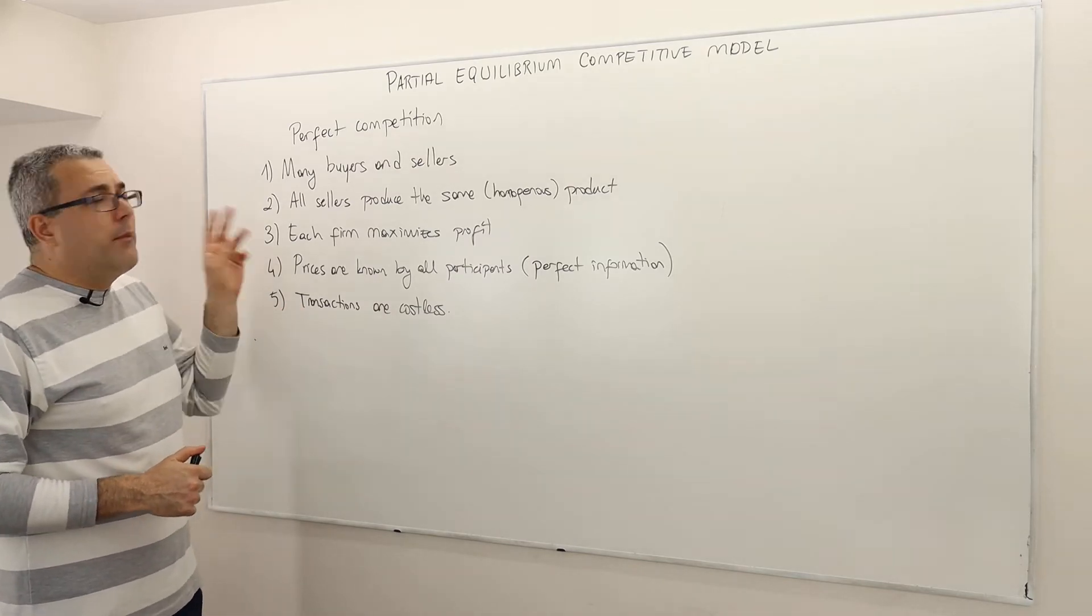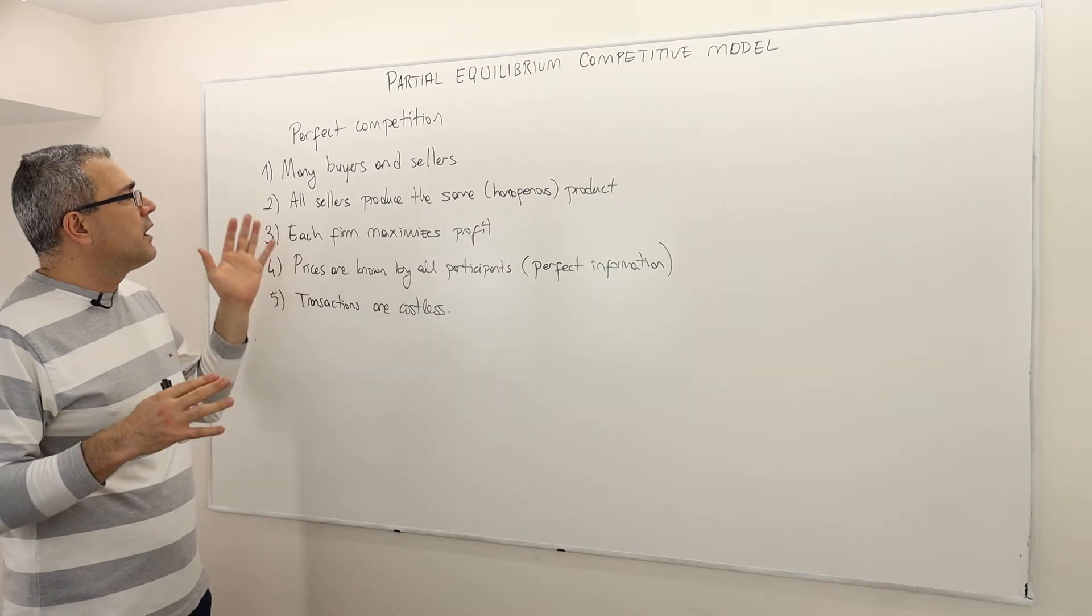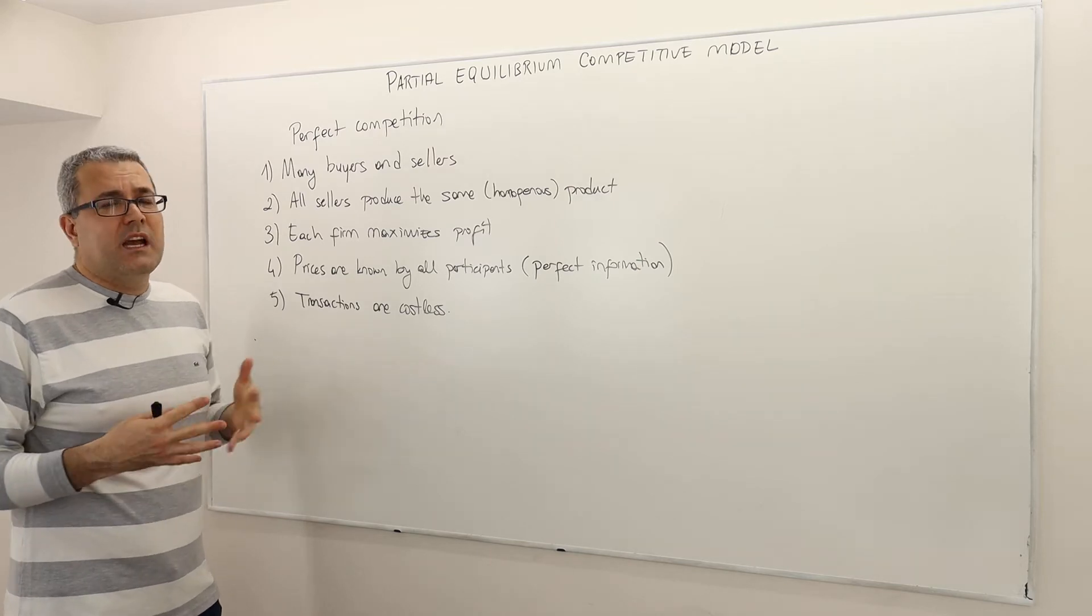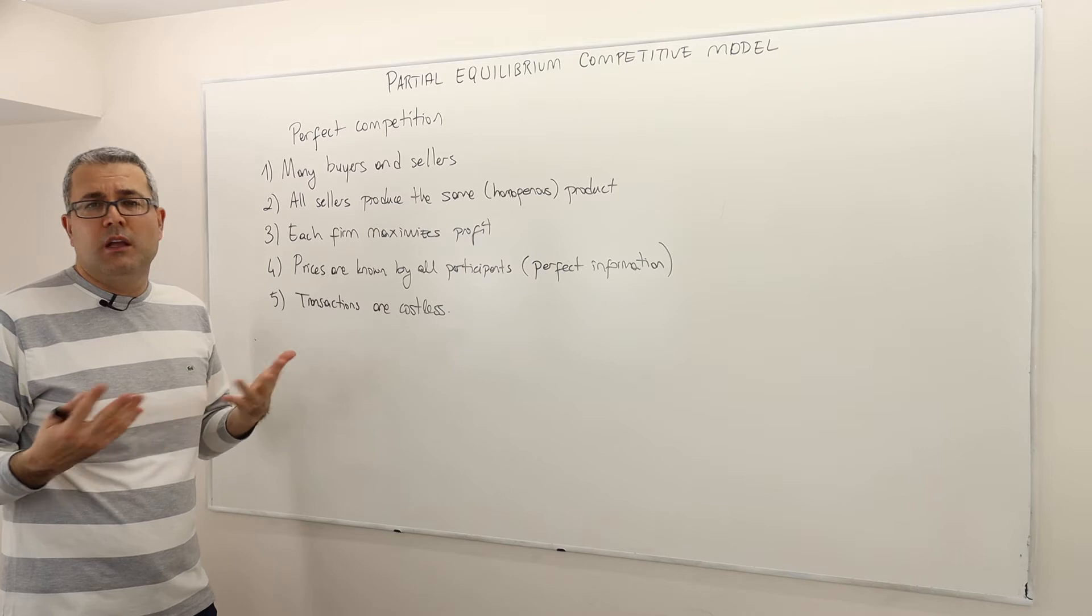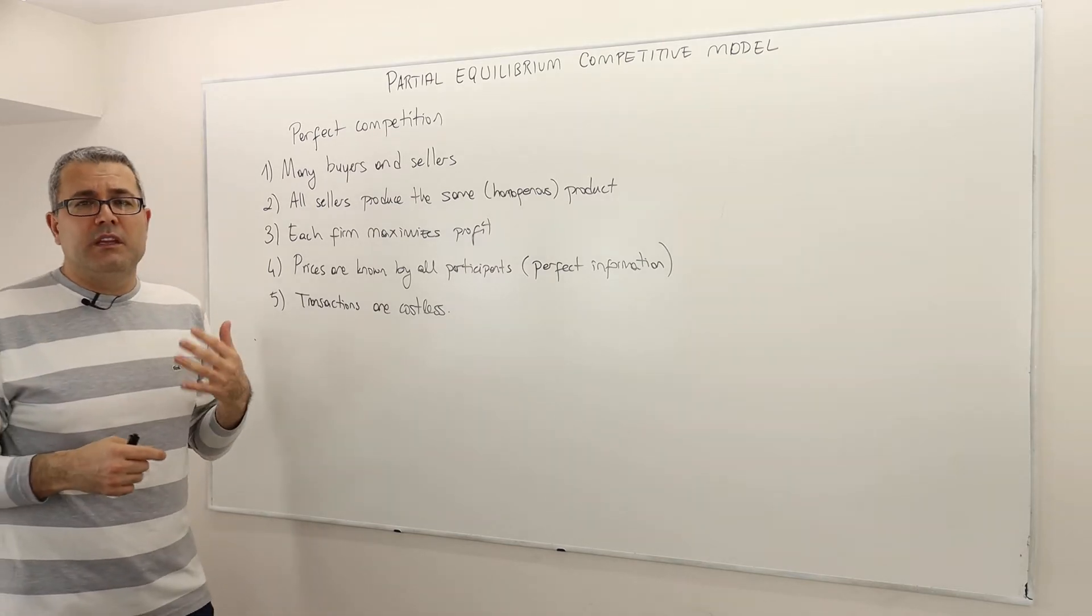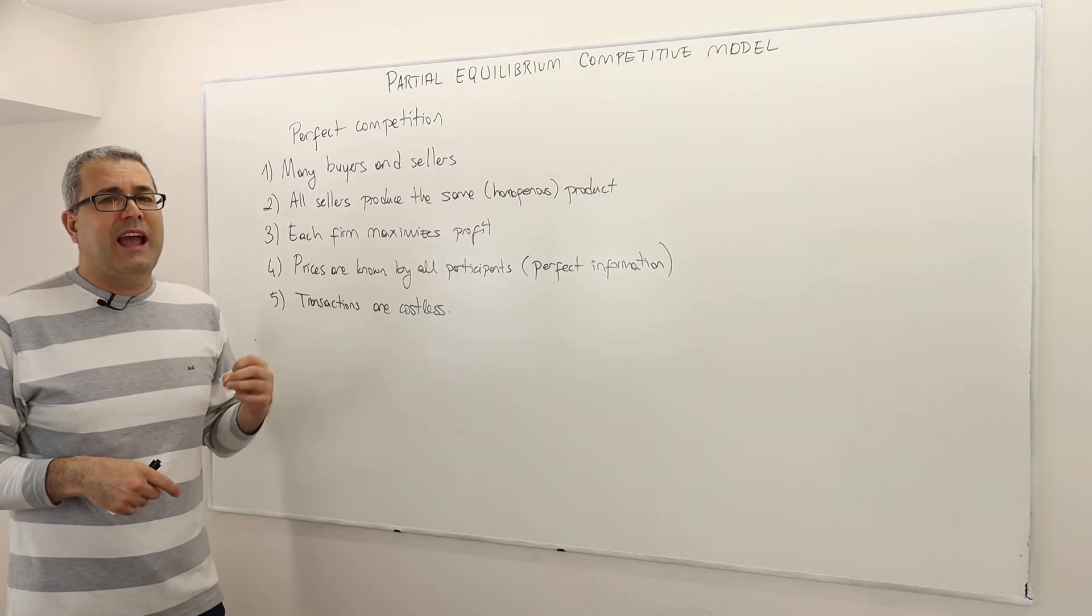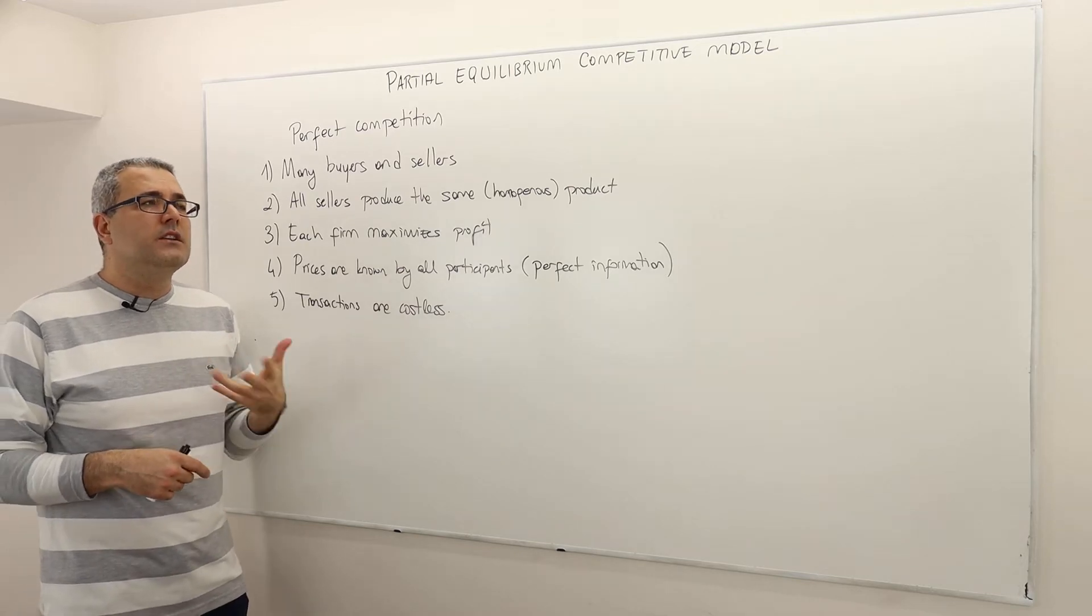A market is perfectly competitive means there are many buyers, a large number of buyers and a large number of sellers. So what does that mean? What number is large? What number is small? Well, it's hard to put any boundary for this. But the idea should be the following. No individual buyer and no individual seller has the power to change or influence the market price.